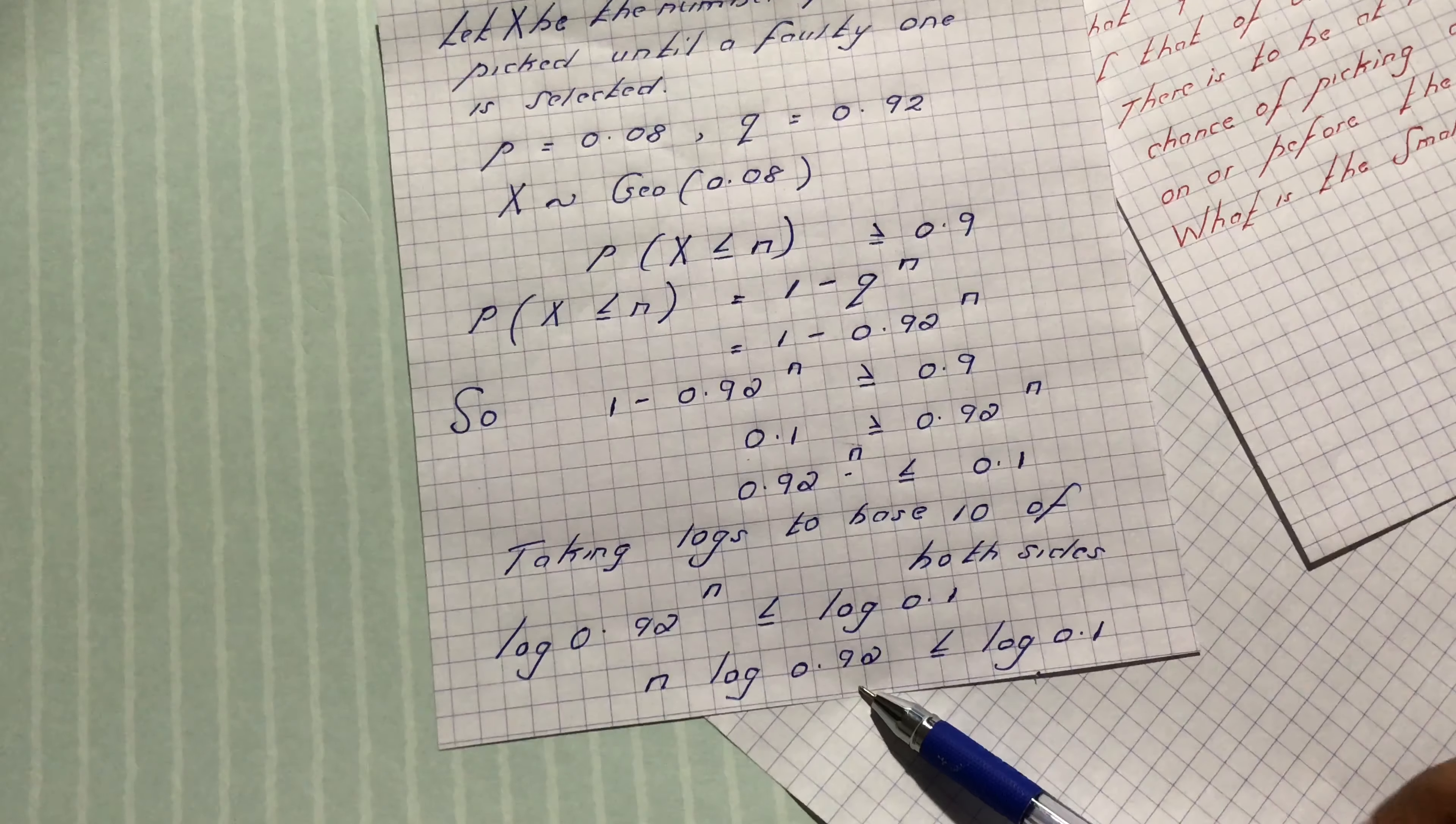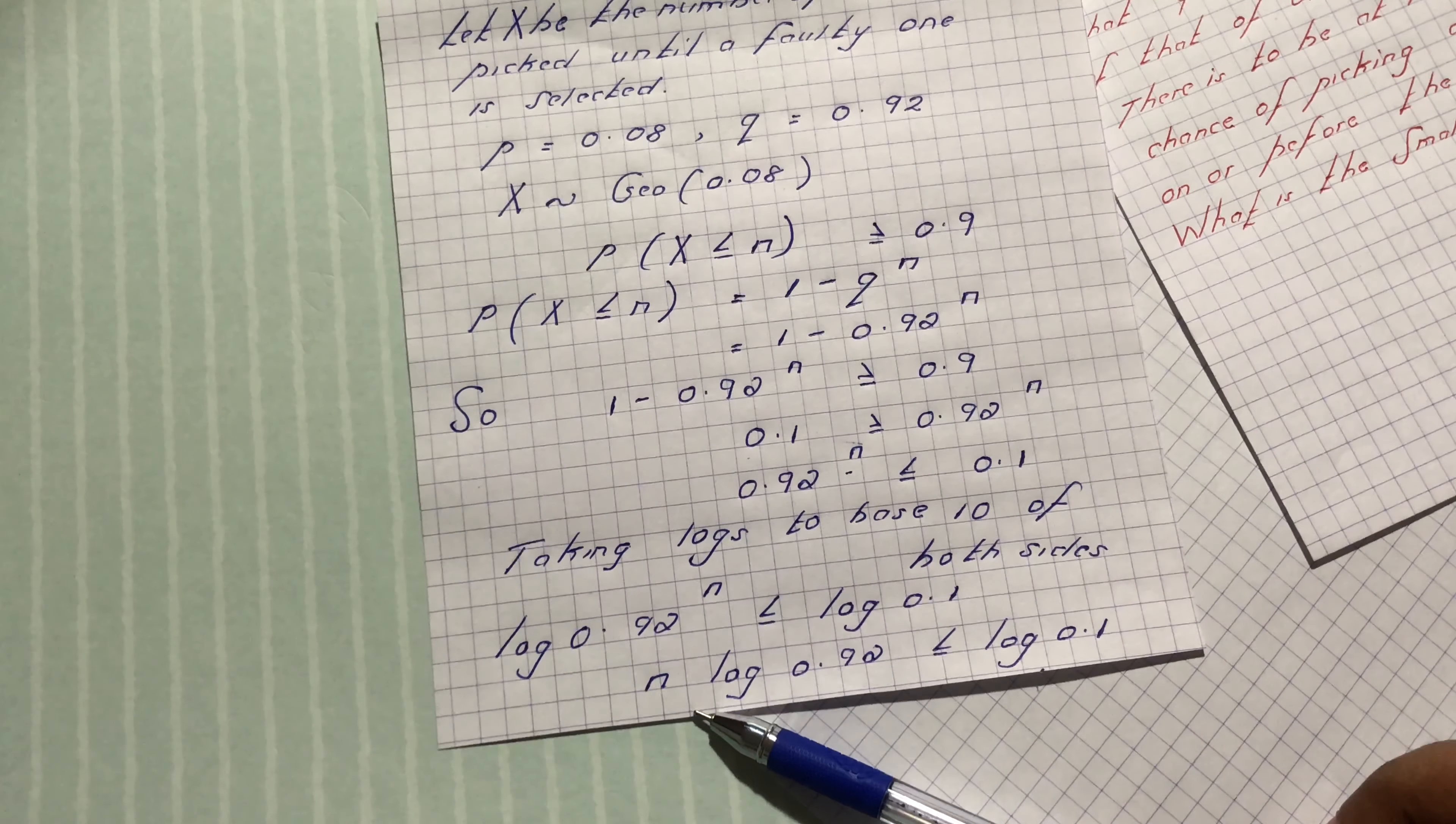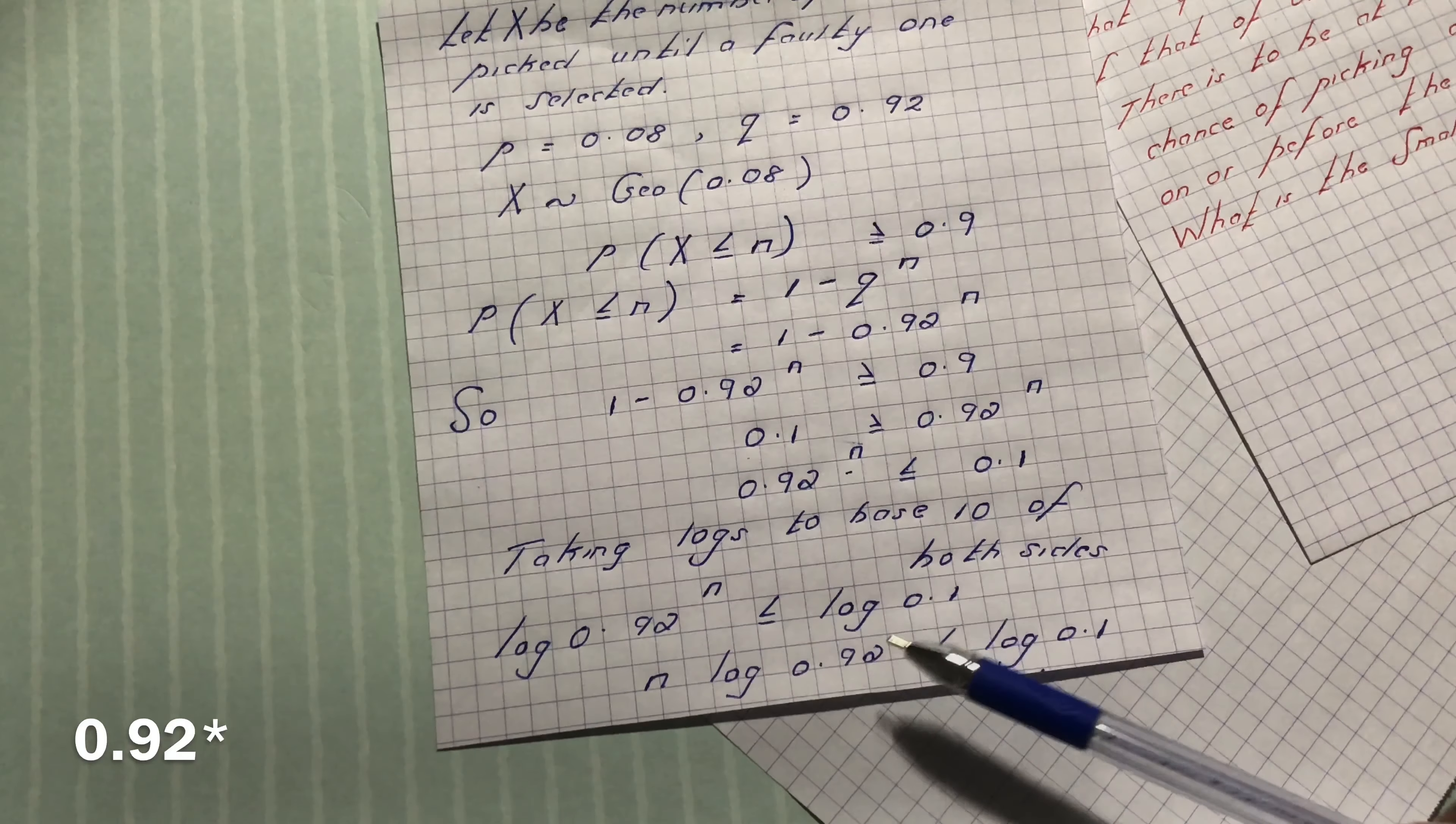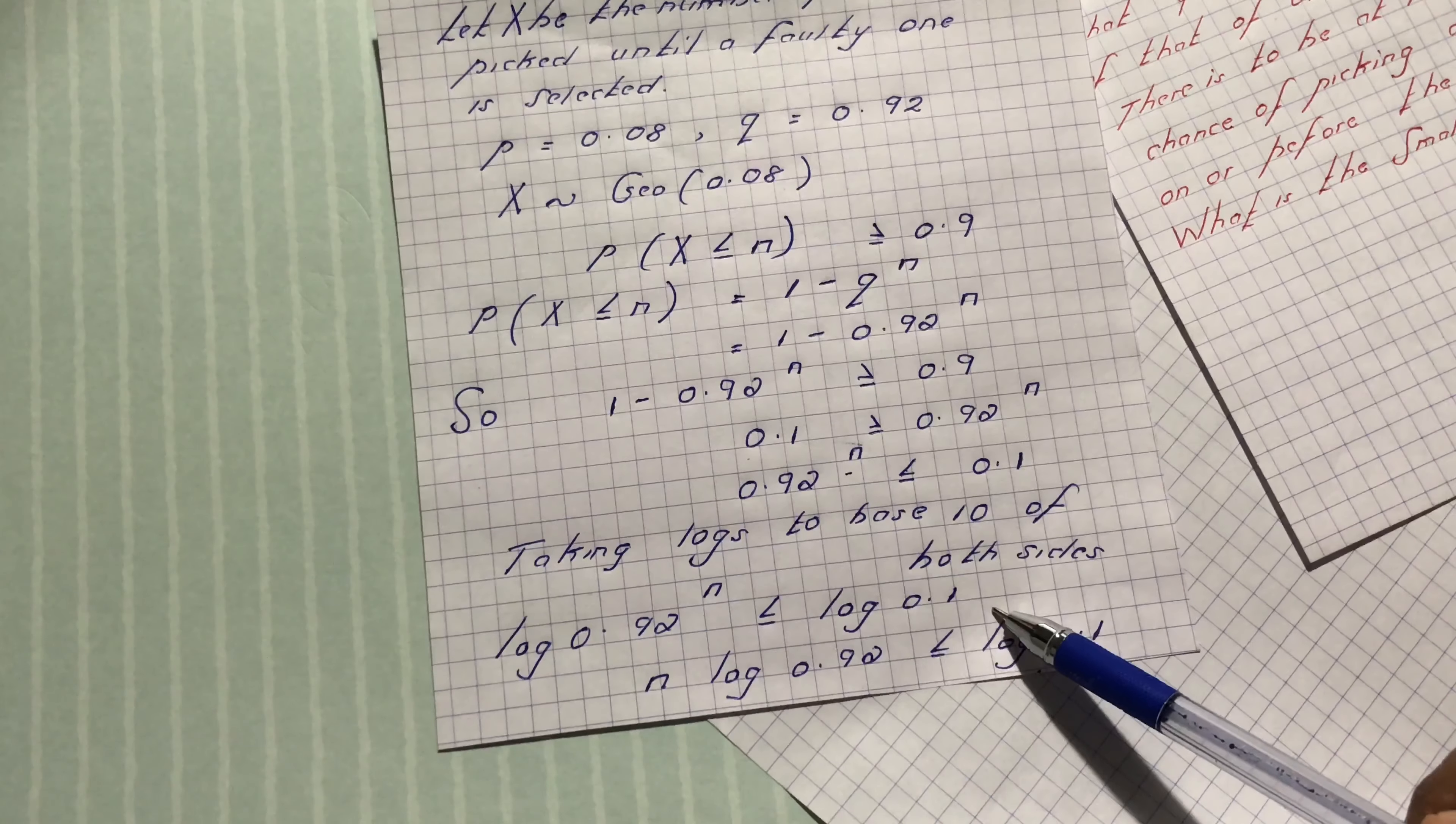Here log of 0.92 is negative. And making n subject of formula we are going to take log of 0.1 divided by log of 0.92. Since we are dividing by a negative number it automatically reverses the inequality.